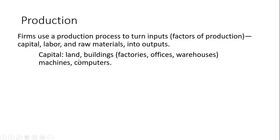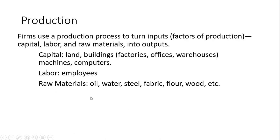Capital refers to land, factories, plants, offices, and warehouses. Capital can also be machines, computers, trucks, bulldozers, and so on. Labor refers to employees. Raw materials refers to things like oil, water, steel, fabric, flour, wood, and rare earth minerals. So all of these factors of production are transformed through the production process to produce outputs.